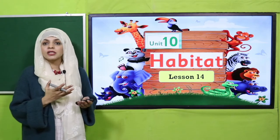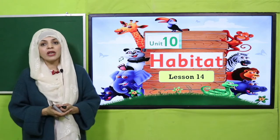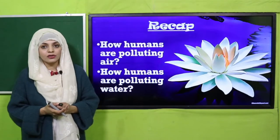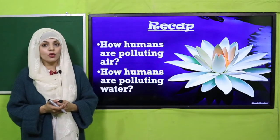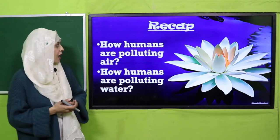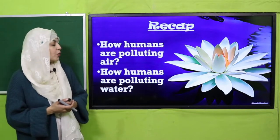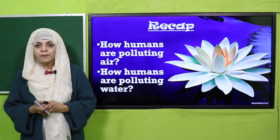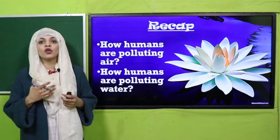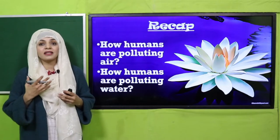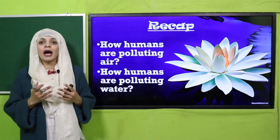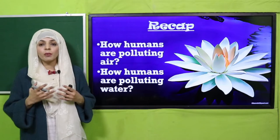Before moving on towards the main lesson, let's quickly recap what we did in the previous lecture. You have to answer a few questions. So quickly focus: how are humans polluting air? Last lecture we studied what human impacts are on different habitats, because human beings, just like animals and plants, are a part of the ecosystem.